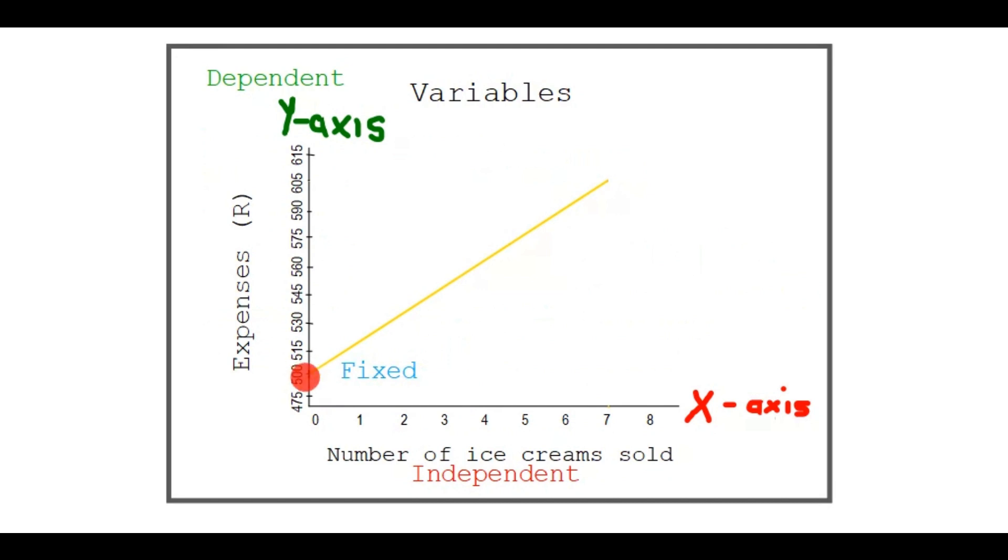Now we can see where the fixed variable goes. The fixed variable is here by 500, so that's the rent for the ice cream truck. Why? Because it's at a point that does not start at zero, so it starts at 500. Your graph does not start at zero.